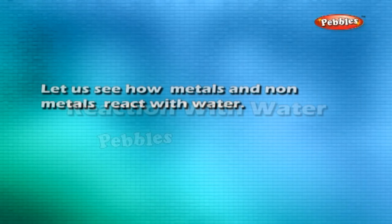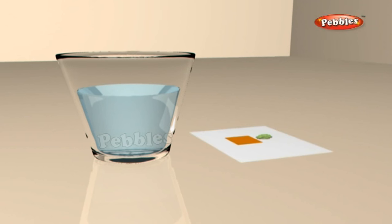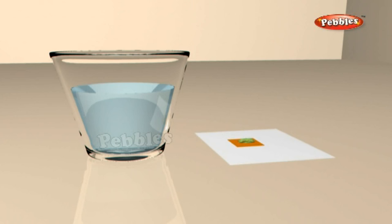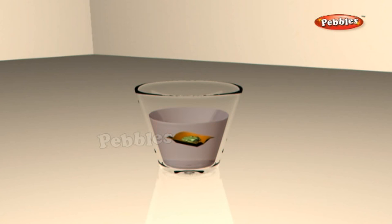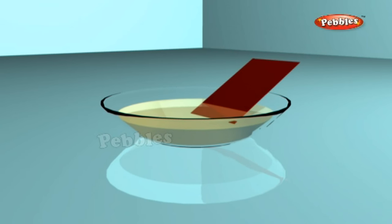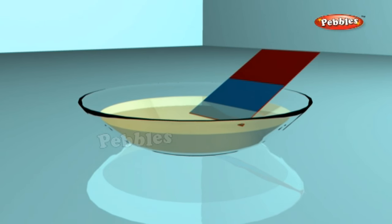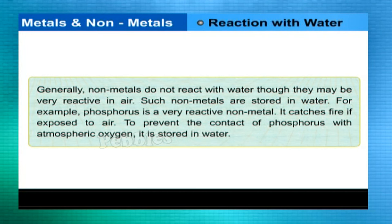Reaction with water: Let us see how metals and non-metals react with water. Take a 250 ml beaker or glass tumbler and fill half of it with water. Carefully cut a small piece of sodium metal, dry it using filter paper, and wrap it in a small piece of cotton. Put the sodium piece into the beaker and observe carefully — keep away from the beaker. When the reaction stops, touch the beaker and test the solution with red and blue litmus papers. Sodium reacts vigorously with water. Generally, non-metals do not react with water, though they may be very reactive in air. Such non-metals are stored in water.